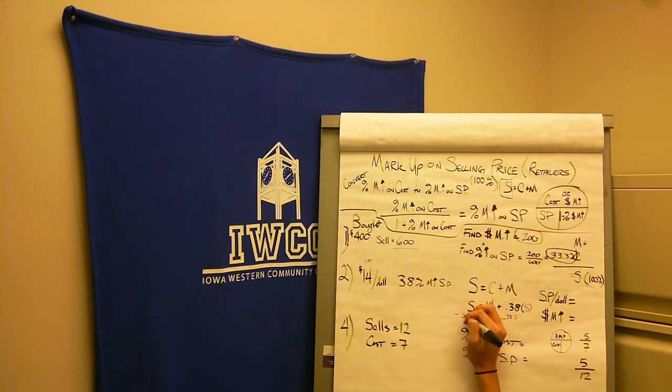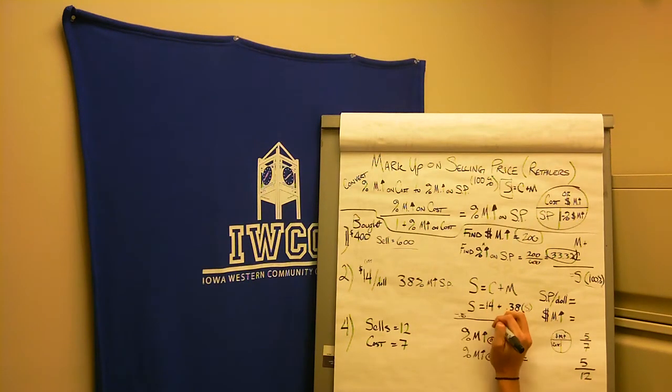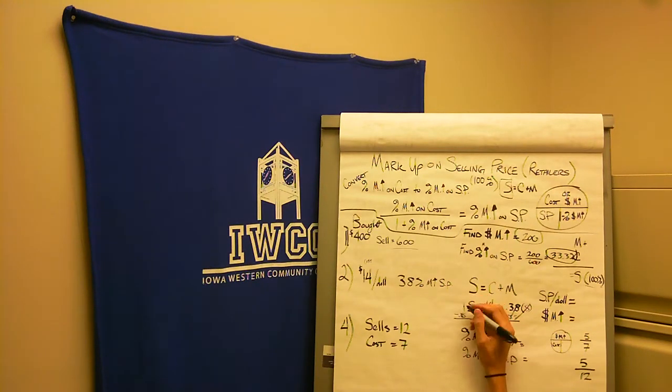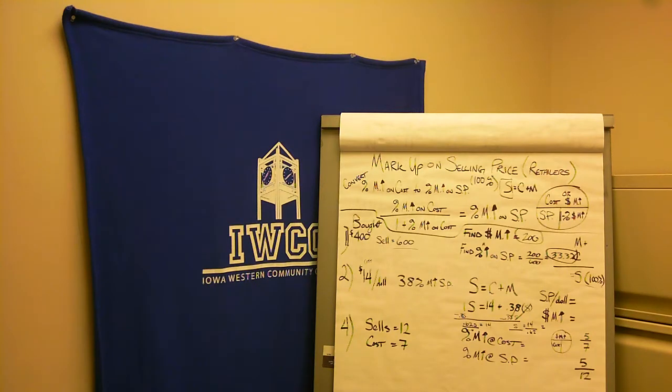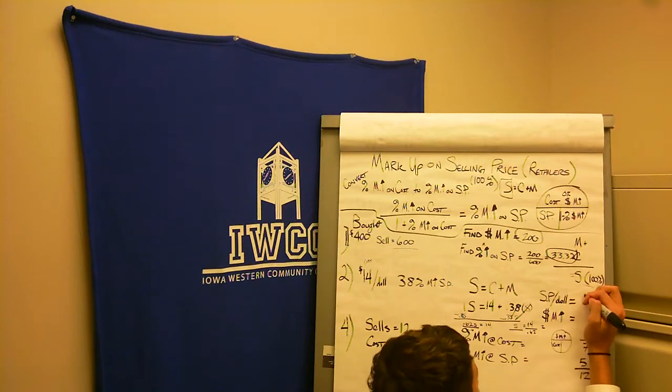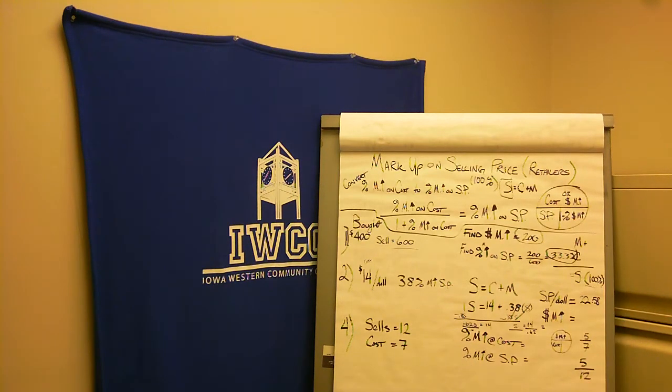So 0.38 S minus 0.38 S. So these wipe out. So this leaves us, so 1 S minus 0.38 leaves us 0.62 S equals 14. So S divided by 0.62. So 14 divided by 0.62 equals, what is that? Type it into the calculator real quick. It says 14 divided by 0.62 is $22.58. So that is our selling price per doll. So $22.58. So what's our markup? Well, it cost us 14. So minus 14, $8.58 is our markup. So that is 38 percent of what she bought it for.